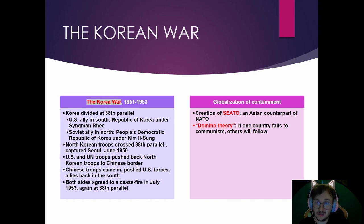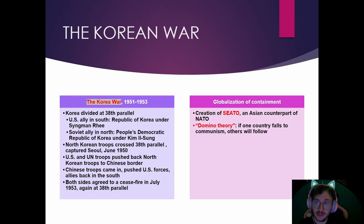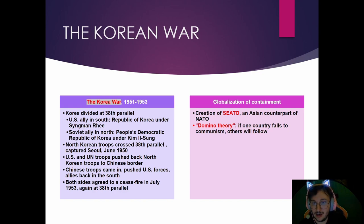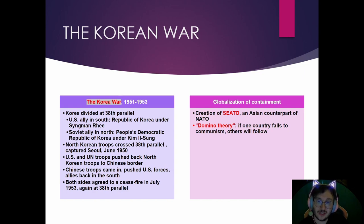This stopped Korea from falling to communism. Korea is still two countries today, which will be different from Vietnam. During this time, America created an alliance system of non-communist countries. Just as they had NATO in Western Europe and North America, they created SEATO — the Southeast Asian Treaty Organization.